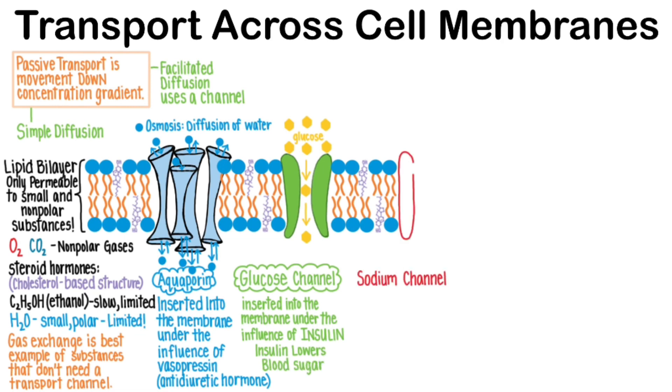The voltage-gated sodium channel is an example of an ion channel in cell membranes. Serum sodium is the concentration of sodium in the blood, and it is maintained at about 135 to 145 milliequivalents per liter at all times.